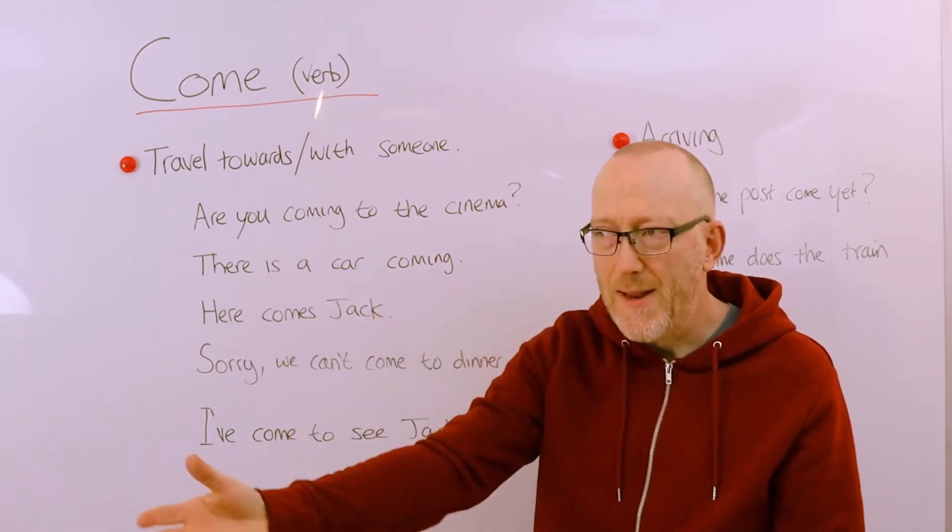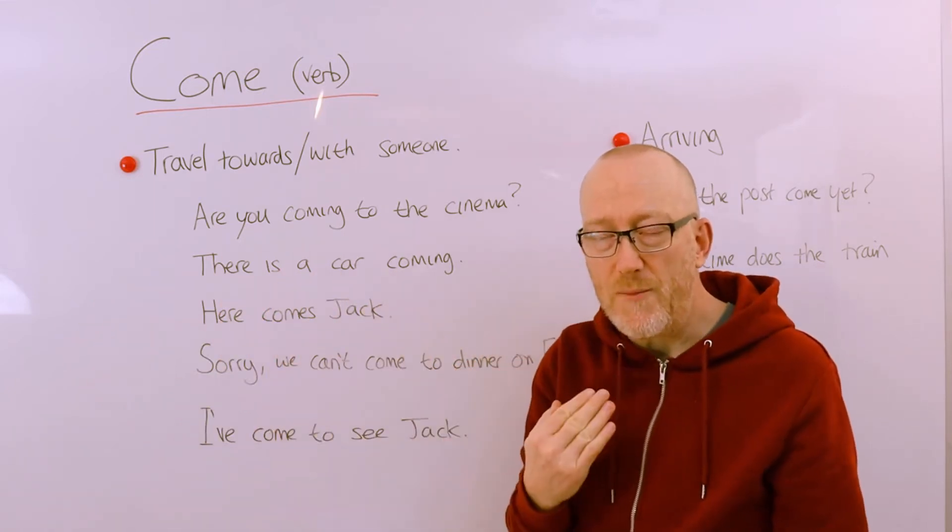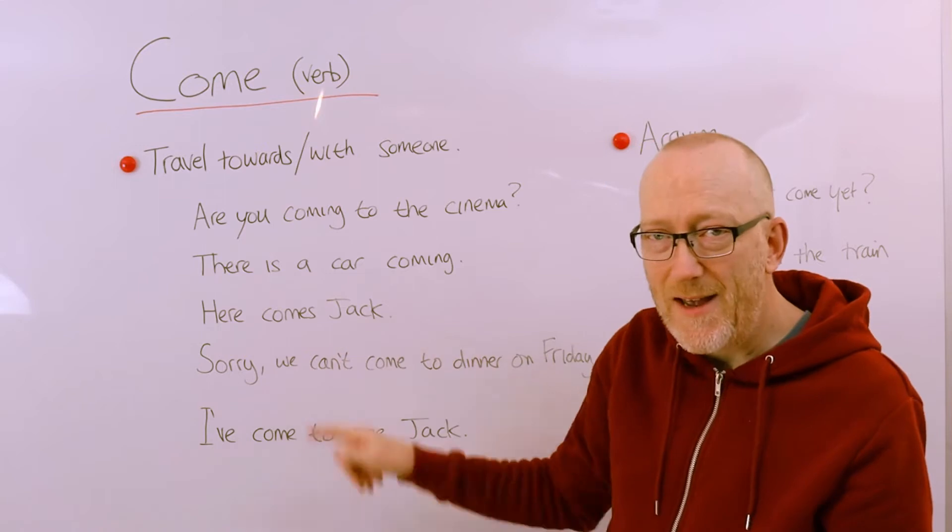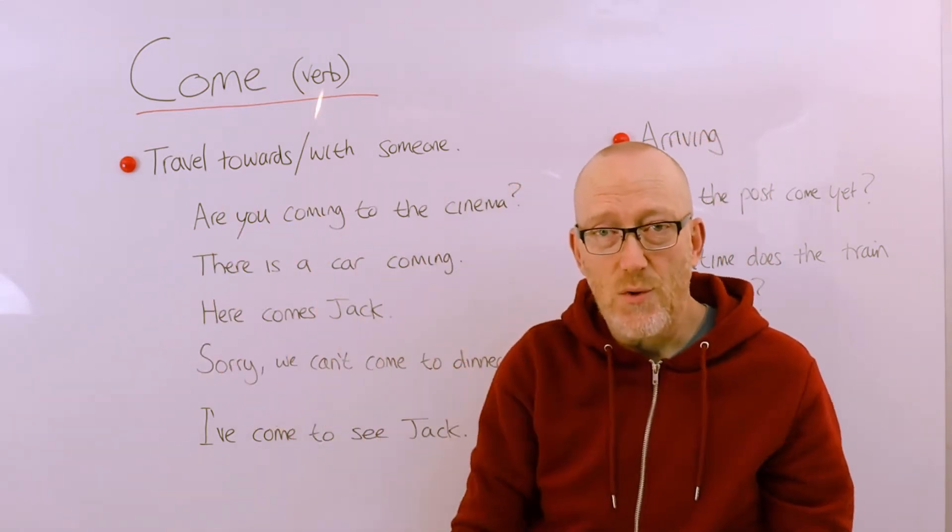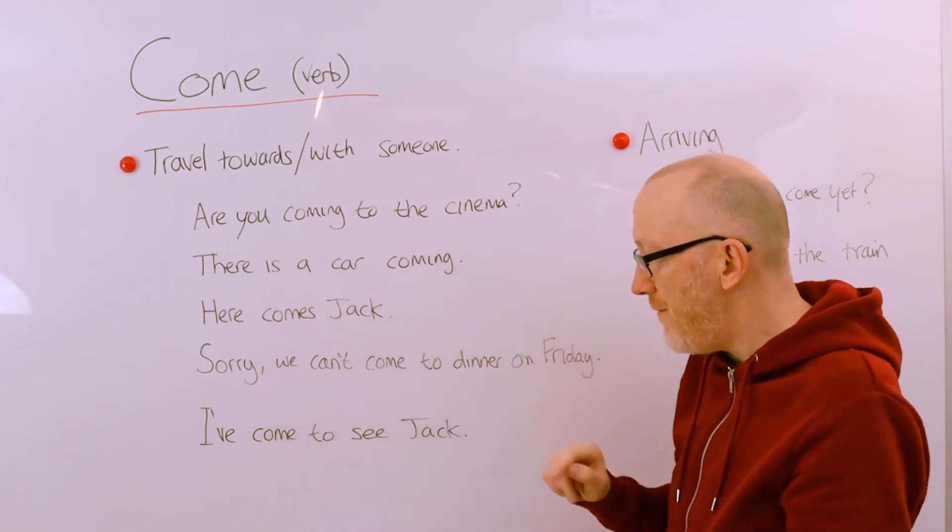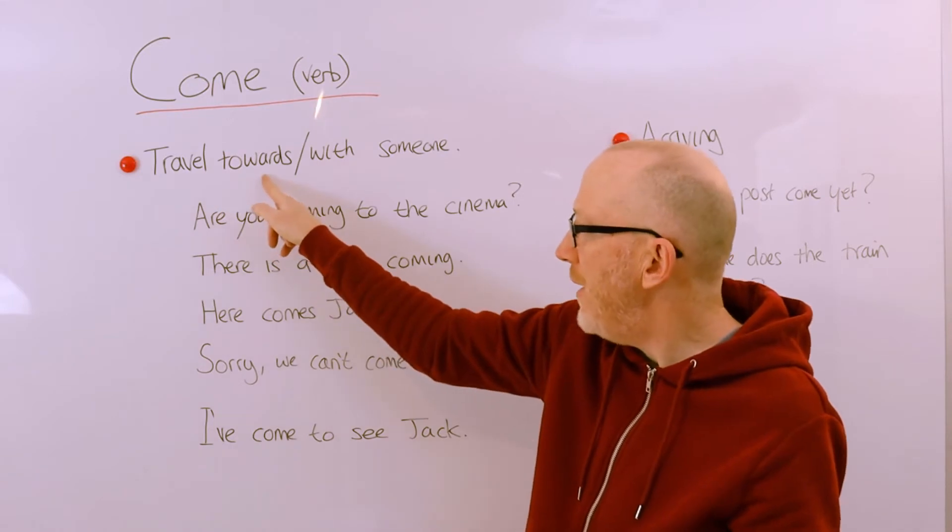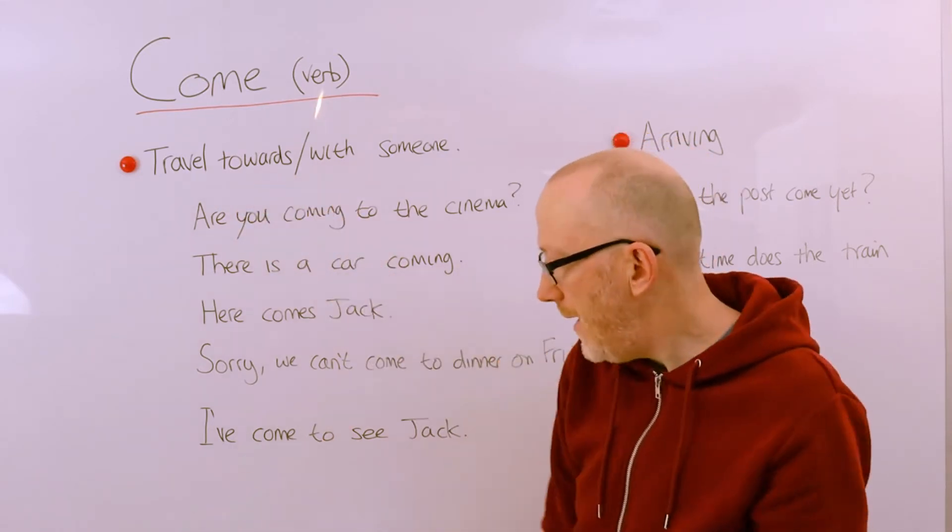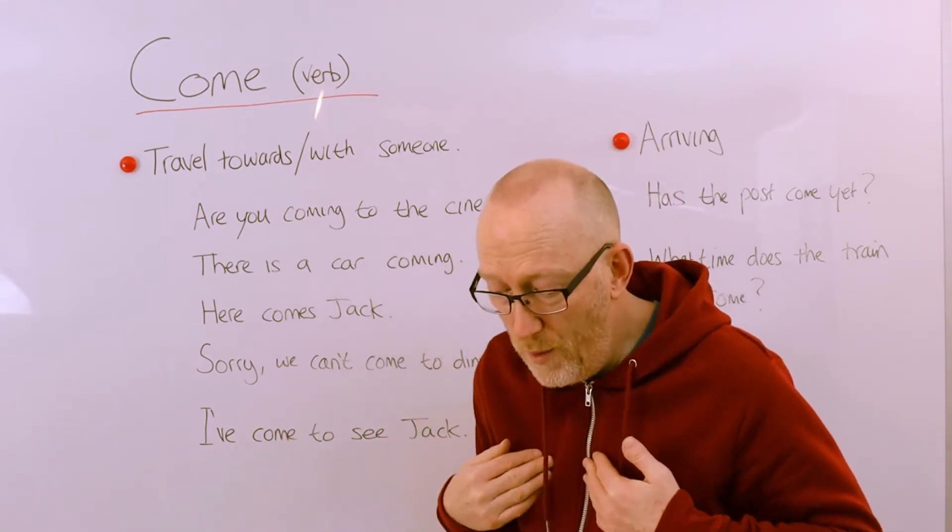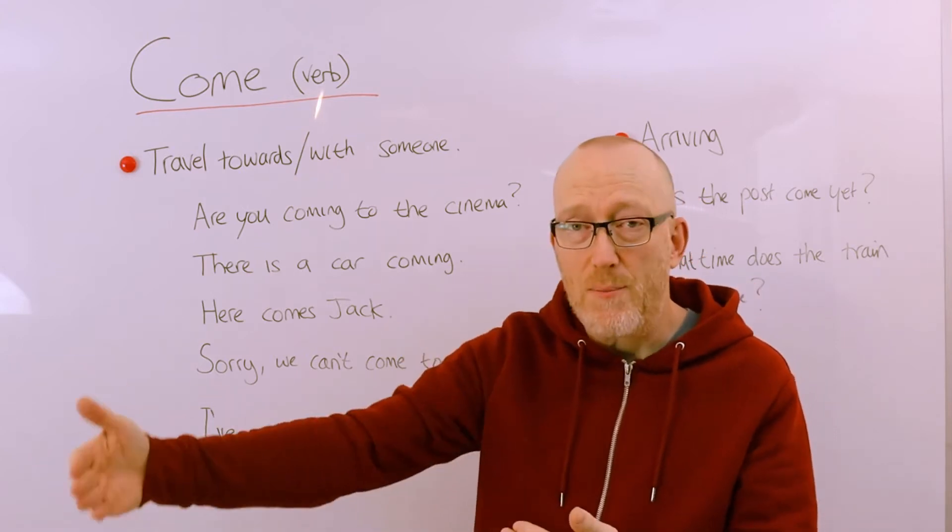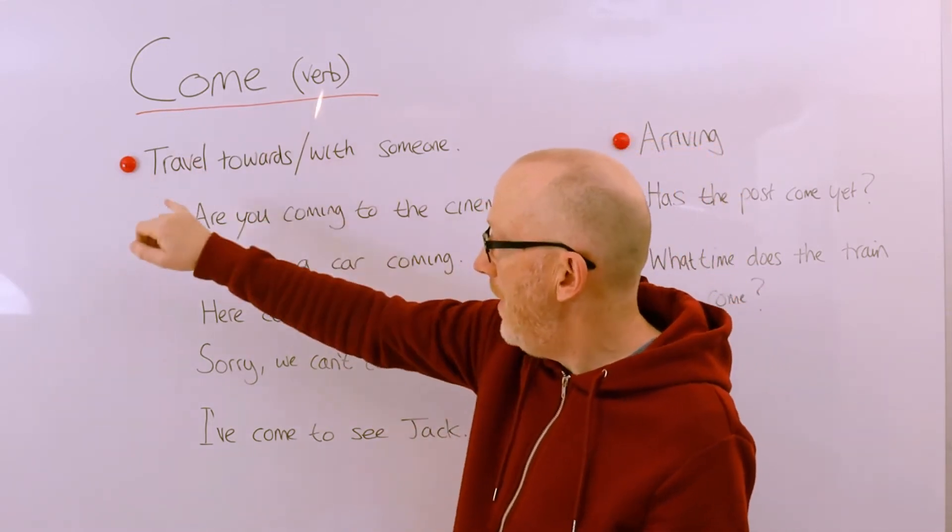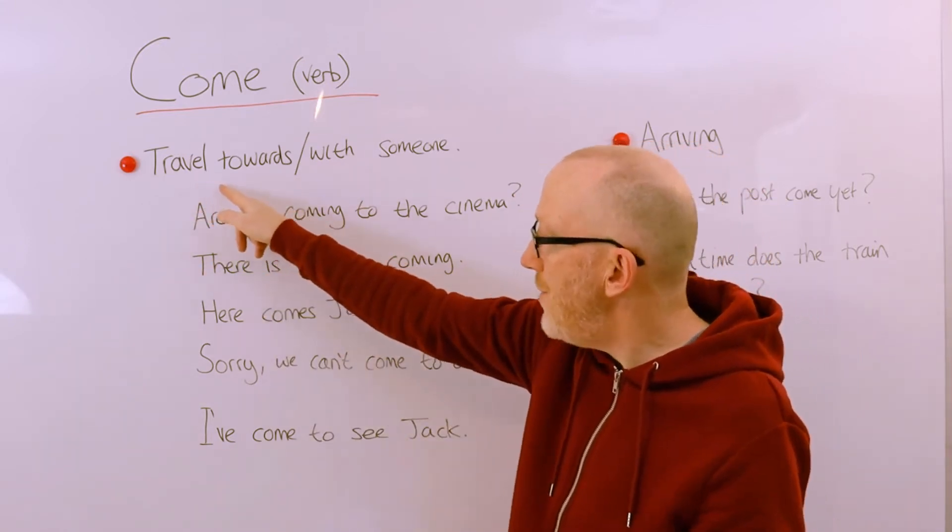There is a car coming. So this is a different example because it's not me traveling with somebody else, this is an object coming towards me. So there's a car and it's coming towards me. Similarly, here comes Jack. There's Jack, I can see Jack and he is coming towards us, he is walking towards us. Sorry, we can't come to dinner on Friday. We can't come, so we're saying no, we will not be traveling towards you or even with you. And finally, I've come to see Jack. So I have traveled, I have walked or traveled in a direction and I have arrived at a place, and the reason for doing that is because I want to say hello to Jack. So when you hear come, think initially in a lot of instances travel towards or with somebody or something.